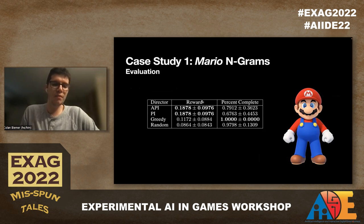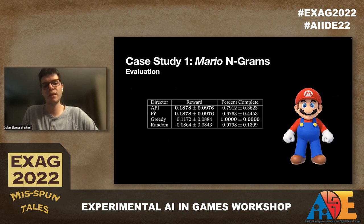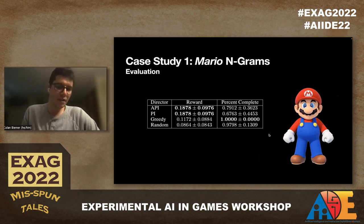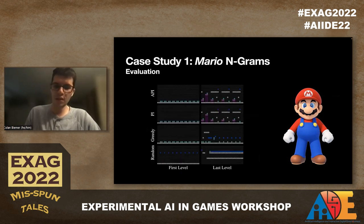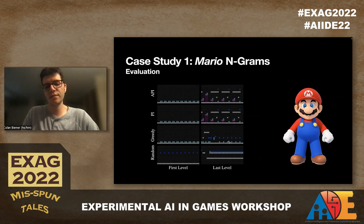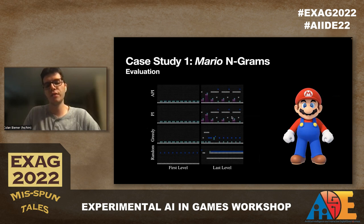In terms of reward results, API and PI performed similarly, but greedy had a higher percent complete and random was second highest. This actually shows one of the problems with this approach: if we can't guarantee playability, the method isn't that great, because any level the player knows they cannot beat will just be a frustrating experience. In the levels generated, you can see the first level is very enemy-heavy, and by the last level greedy hasn't changed much whereas policy and API have. There's also a looping problem when using an n-gram structure for your MDP.